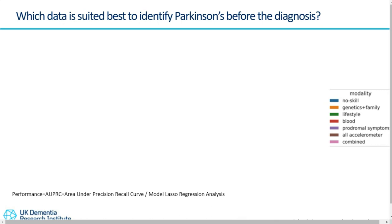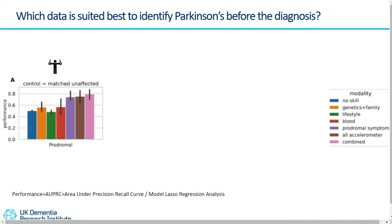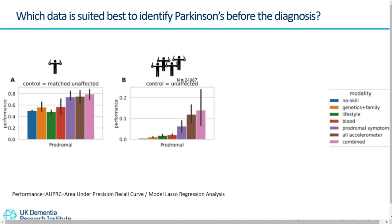We tried different models with different control groups. First, we used matched controls with the same age and gender, and found three models performing equally well. The second test was to consider unmatched controls that are not affected by another disorder — in this case, only the accelerometry alone works and performs better than the other models. We don't find that combining different modalities improves the performance of our model. But what's very interesting is that when you consider all UK Biobank participants including controls affected by some other disorder, the prodromal symptoms become unpredictive. The reason is that prodromal symptoms are not necessarily specific for Parkinson's disease — they can also announce other disorders.